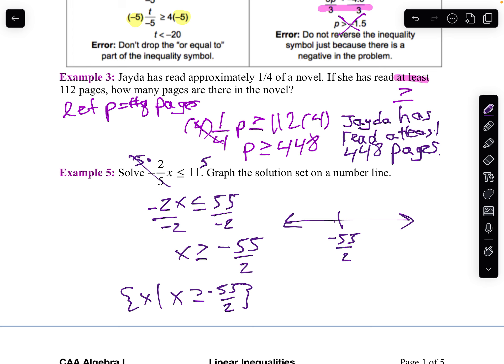Now when you graph it on the number line, you need to have negative 55 over 2. If I go to the right, that would be negative 54 over 2, which would be negative 27, wouldn't it? If I go to the left, I'd be at negative 56 over 2, which would be negative 28. But really, all I need to have is negative 55 over 2. The other numbers are nice. And since it's a line, I'm going to put a closed circle on negative 55 over 2. And I'm going to shade that to the right, because it's greater than.